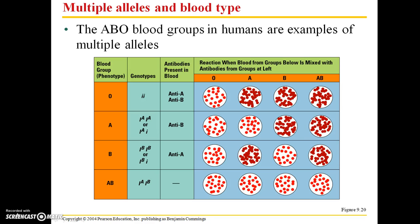The ABO blood groups in humans are examples of multiple alleles. If you've ever had your blood type determined, you basically add the antibodies for these various types of carbohydrates, A and B, to a sample of your blood. For example, if you have the O blood type and you add the antibody serum that has A antibodies, you're going to get a reaction — clotting — because your own blood does not contain the carbohydrate type A.